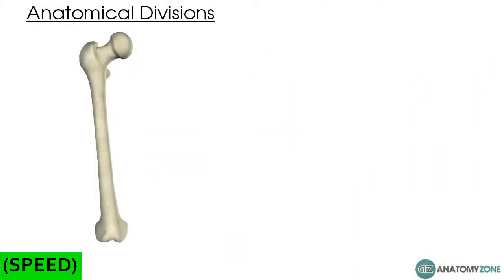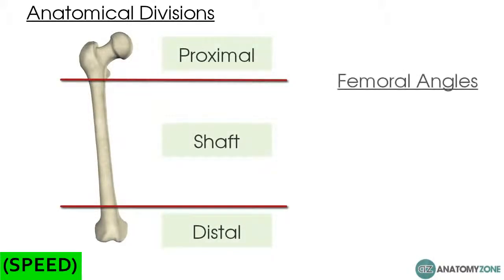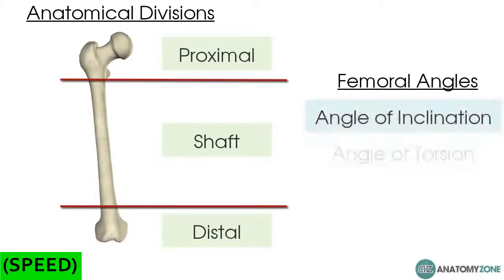Anatomically the femur is divided into three regions: the proximal femur, the shaft, and then the distal femur. We'll then finish the tutorial by looking at the angle of inclination and the torsion angle of the femur, which you might come across.